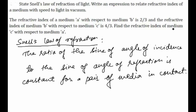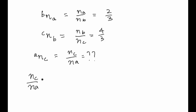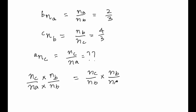The question asks us to find the refractive index of medium C with respect to medium A, that is NC by NA. To find this, we take NC by NA and multiply both numerator and denominator by NB. This gives us NC upon NB multiplied by NB upon NA.